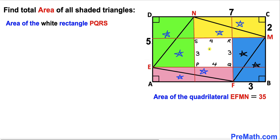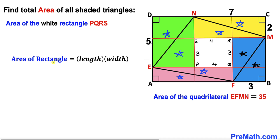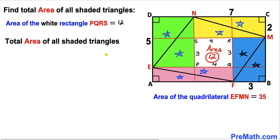Now let's calculate the area of the white rectangle PQRS. Recalling the area of rectangle formula: area equals length times width. Our length is 4 units and our width is 3 units. Therefore the area of white rectangle PQRS is 4 times 3, giving us 12 square units.